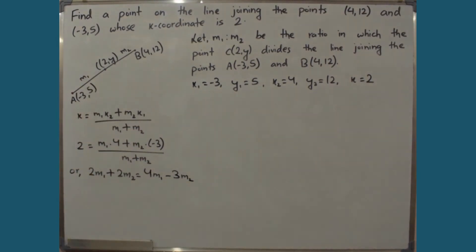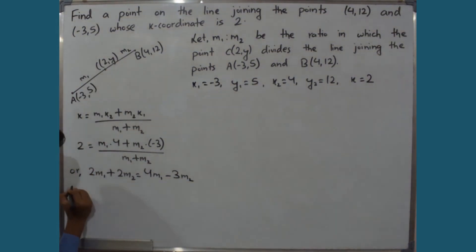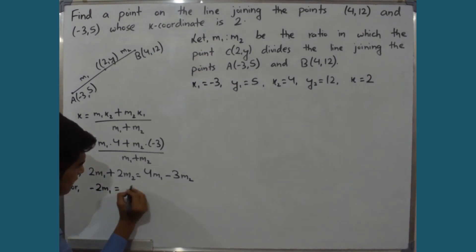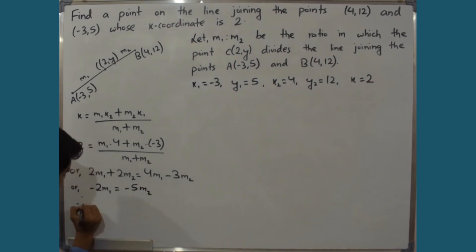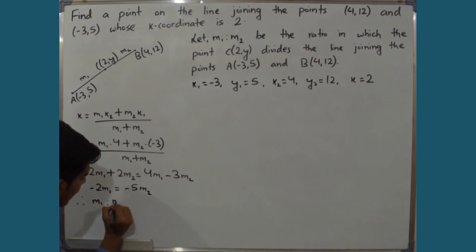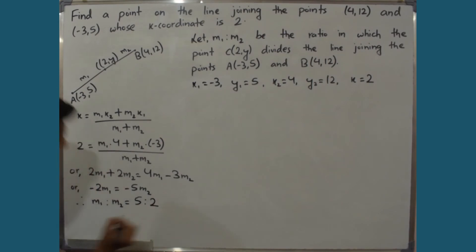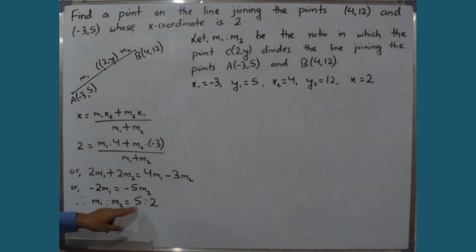Rearranging the terms — moving M1 terms and M2 terms to respective sides — we get -2M1 = -5M2, therefore M1 is to M2 equals 5 is to 2. So the ratio M1:M2 is 5:2.